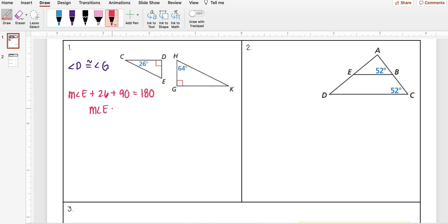Well, 26 plus 90, I get 116. Subtract 116 from both sides. And I get the measure of angle E is equal to 64.